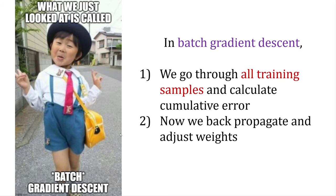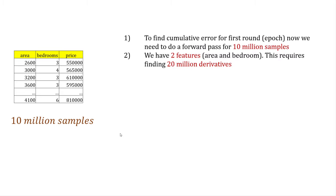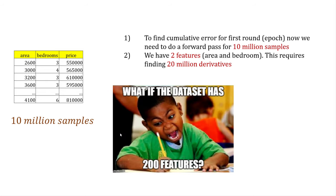In batch gradient descent, we go through all training samples before adjusting the weights. But what if I have 10 million samples instead of 6? Every epoch would go through 10 million samples, find 10 million errors, sum them, then use derivatives to adjust the weight. Before even the first weight adjustment, you'd compute 20 million derivatives for two features. What if you have 200 features? It's going to be crazy computation.